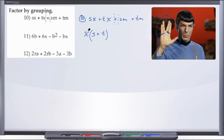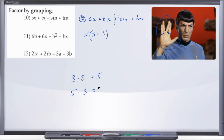We can double-check ourselves: x times S is, in fact, going to give us Sx. You might be thinking that S came first and x came second, but remember, multiplication is commutative — you can do 3 times 5 or 5 times 3 and get 15 either way. So it doesn't matter which order you multiply in; x times S is the same as S times x.